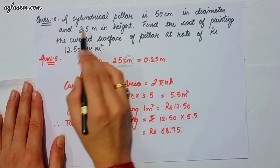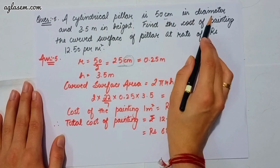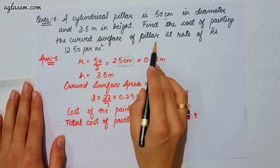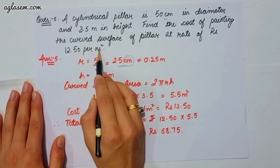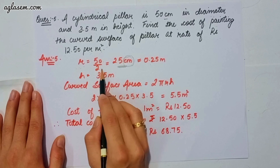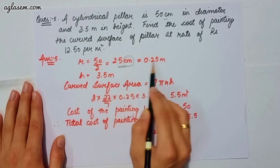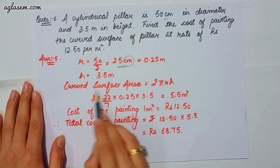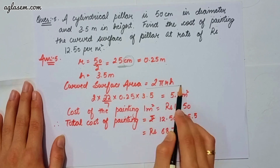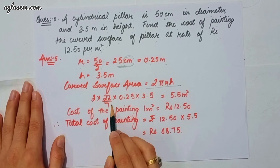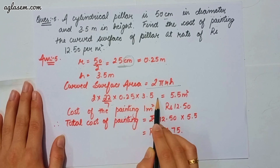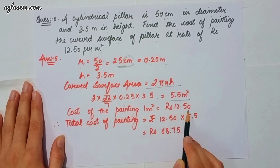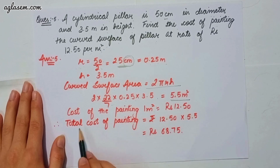Moving to our fifth question: a cylindrical pillar is 50 cm in diameter and 3.5 m in height. Find the cost of painting the curved surface at the rate of ₹12.50 per m². Radius r = 50 ÷ 2 = 25 cm = 0.25 m, height = 3.5 m. Curved surface area = 2πrh = 2 × (22/7) × 0.25 × 3.5 = 5.5 m². Cost of painting 1 m² = ₹12.50.